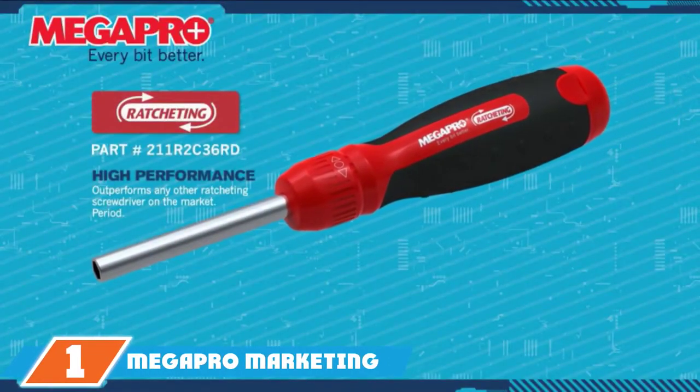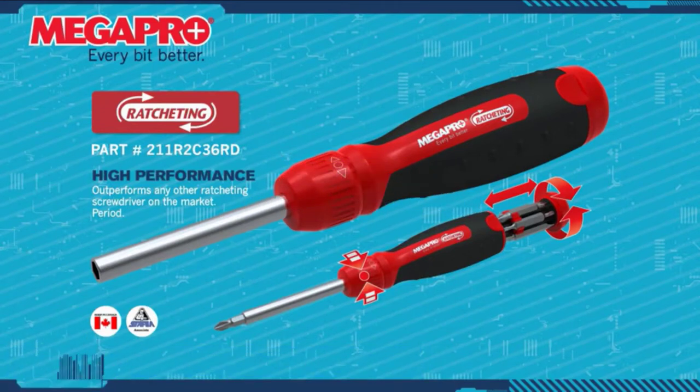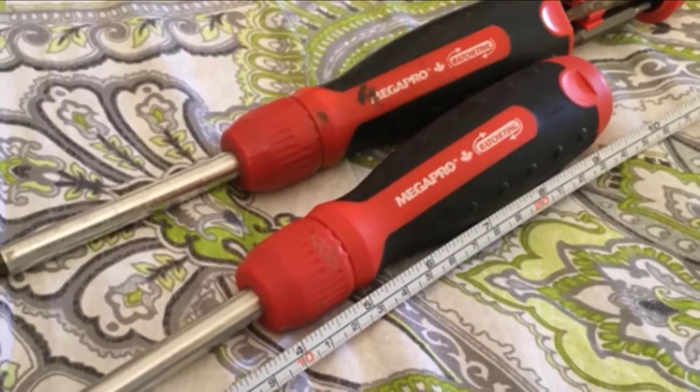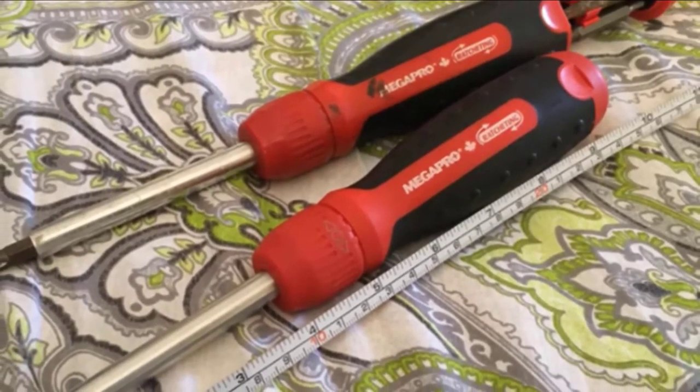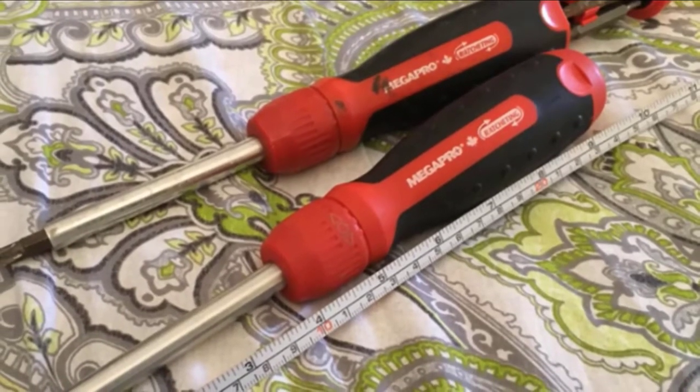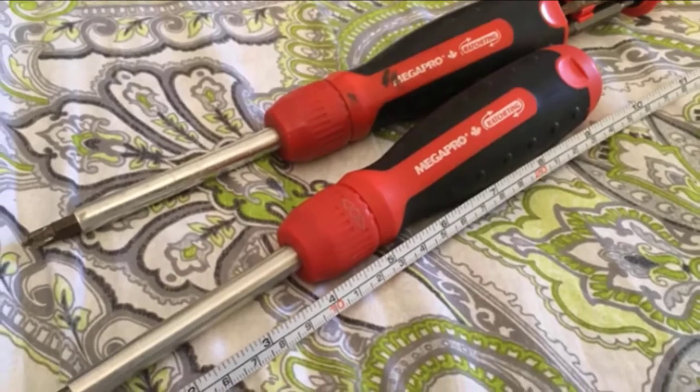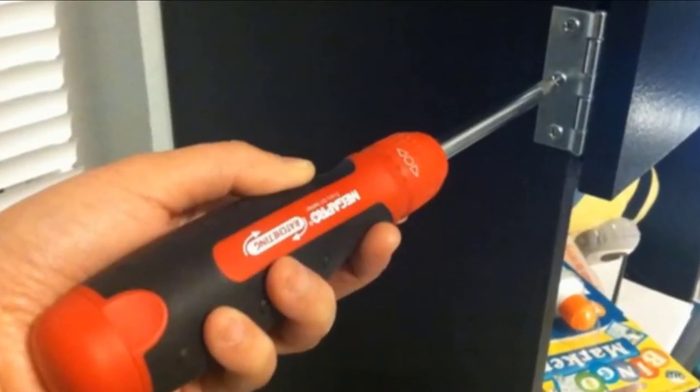At the first position of our list, we have MegaPro Marketing USA Ratcheting Screwdriver. This ratcheting screwdriver is our top pick for several reasons. This pullout bit storage is a patented feature of this ratcheting screwdriver. This makes it simple to store, find and change bits. The handle is made of a nylon and resin combination by-material with a cap that is designed to be easy on your palm. The shaft is made from strong alloy steel.